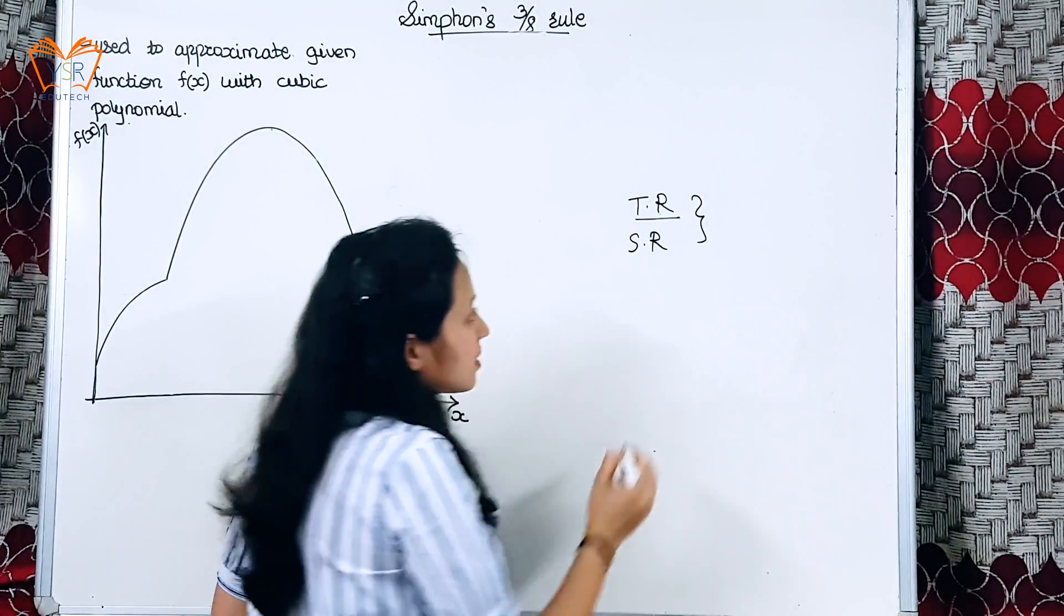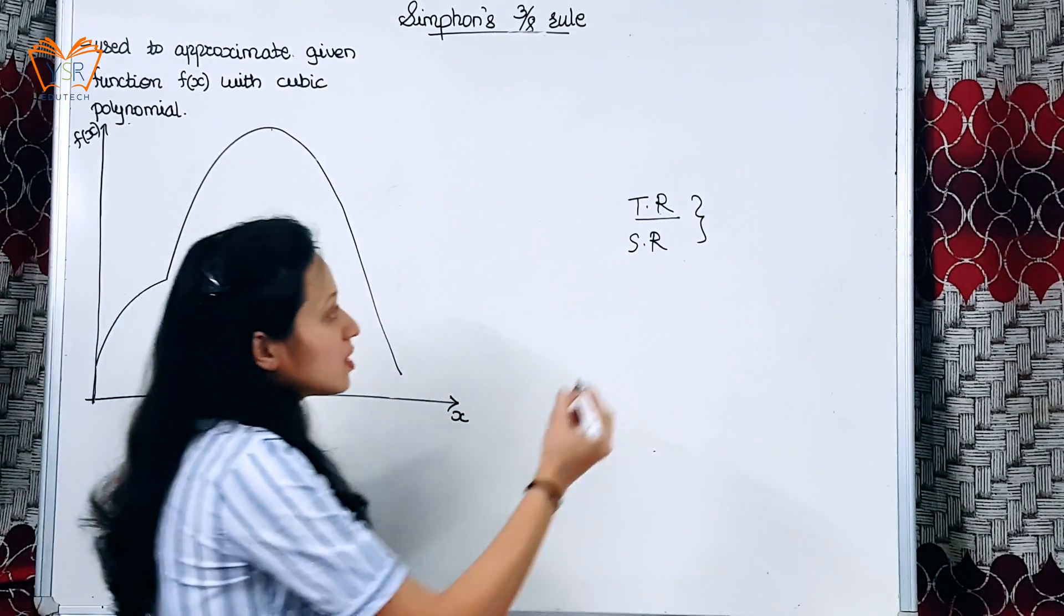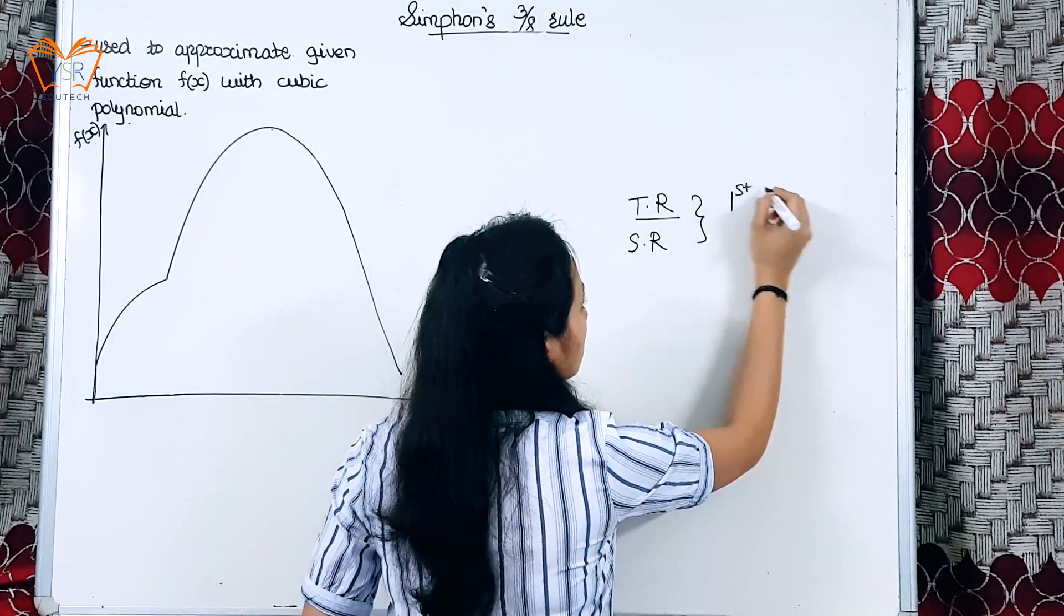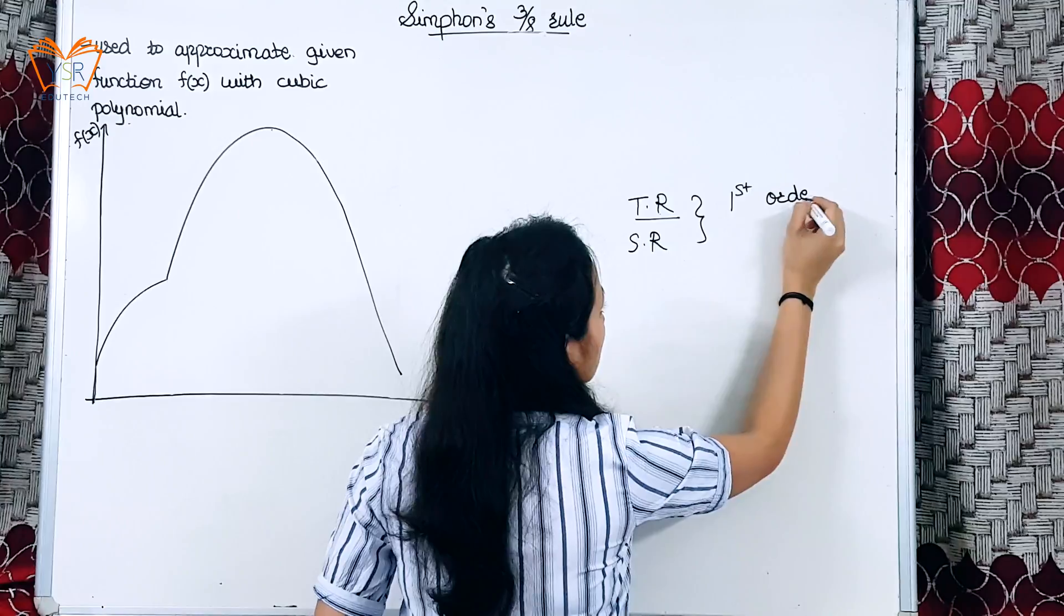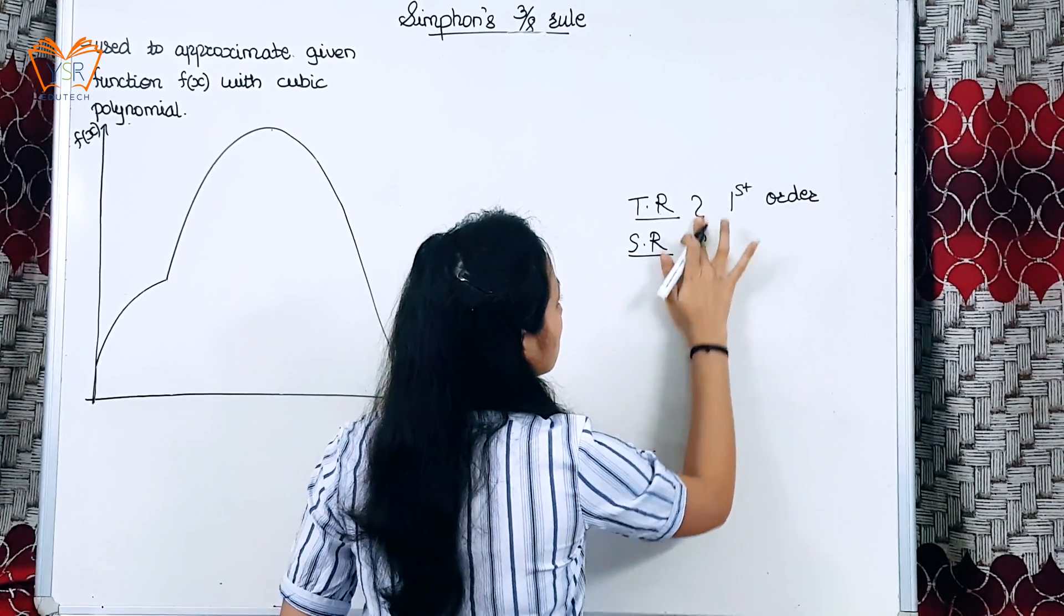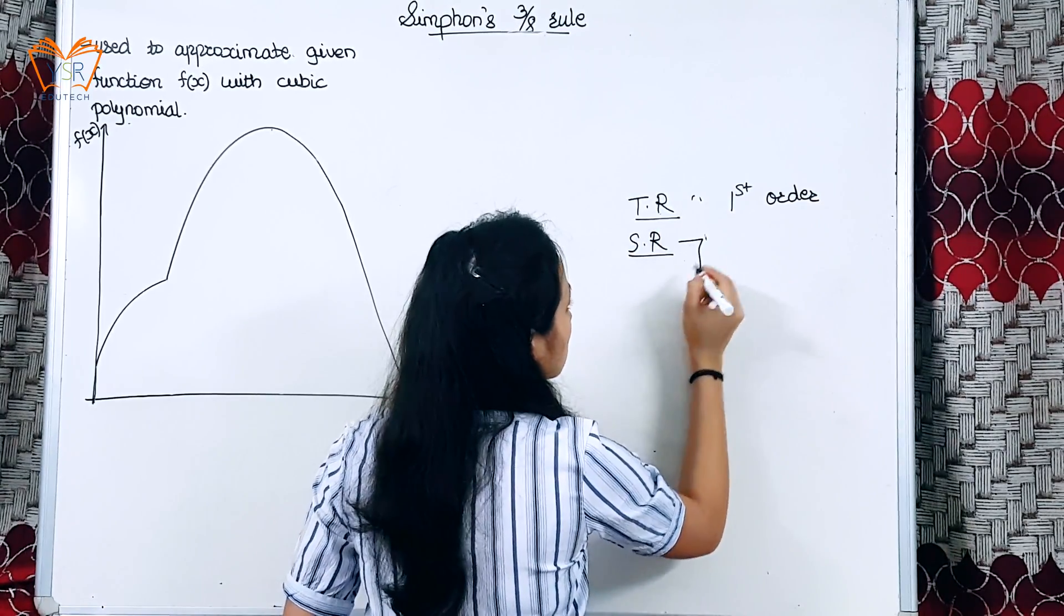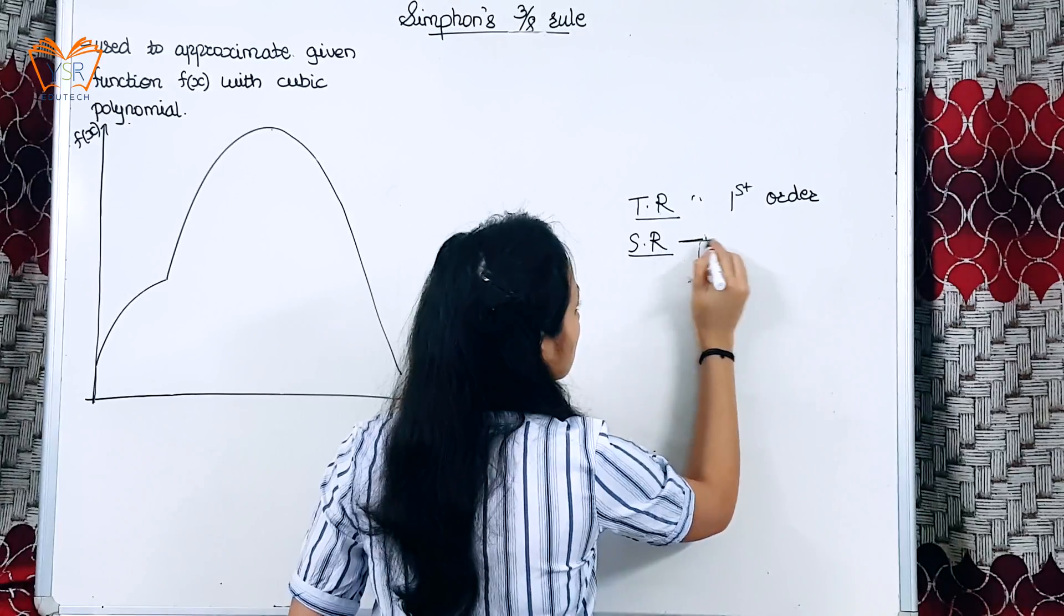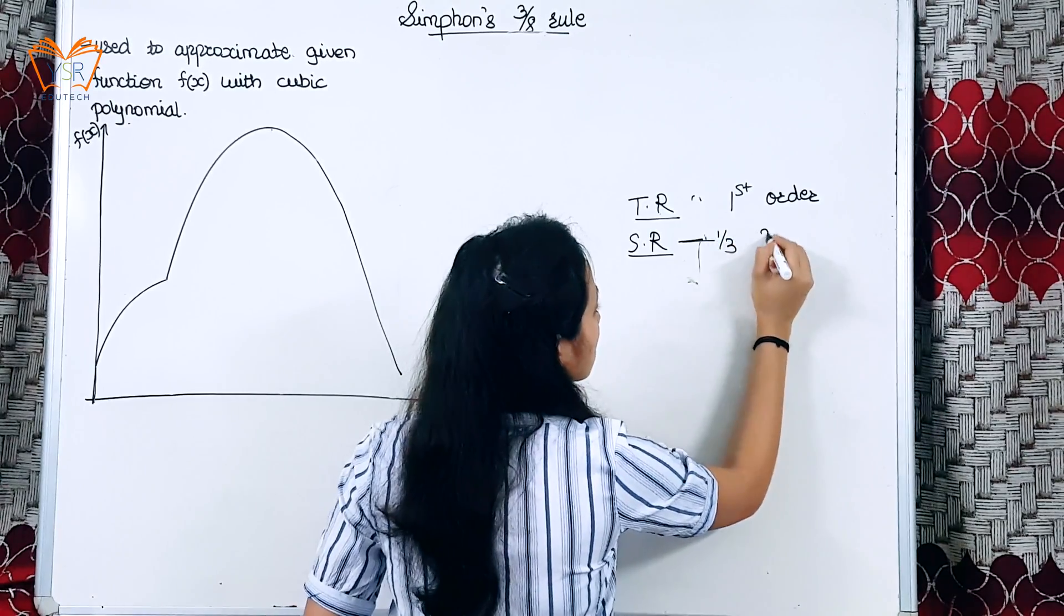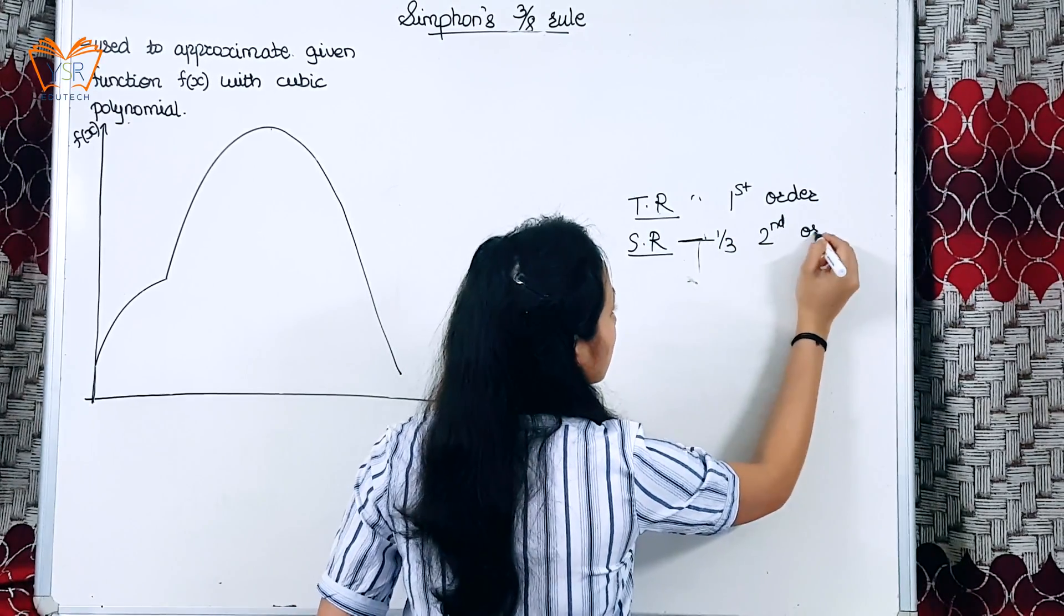In Trapezoidal Rule, we saw that the function was approximated using first order polynomial, and in Simpson's Rule, Simpson's one-third rule, the function was approximated using second order polynomial.